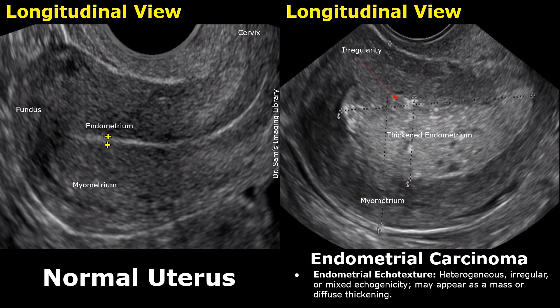Hello everyone, this is Dr. Sam and today we will learn about endometrial carcinoma on ultrasound. Endometrial carcinoma is the primary malignancy of the endometrium and it is the most common gynecological malignancy. On ultrasound, it has some overlapping features with endometrial hyperplasia, but a few findings do differentiate it. We will compare endometrial carcinoma images with normal uterus ultrasound images for better and easier understanding.